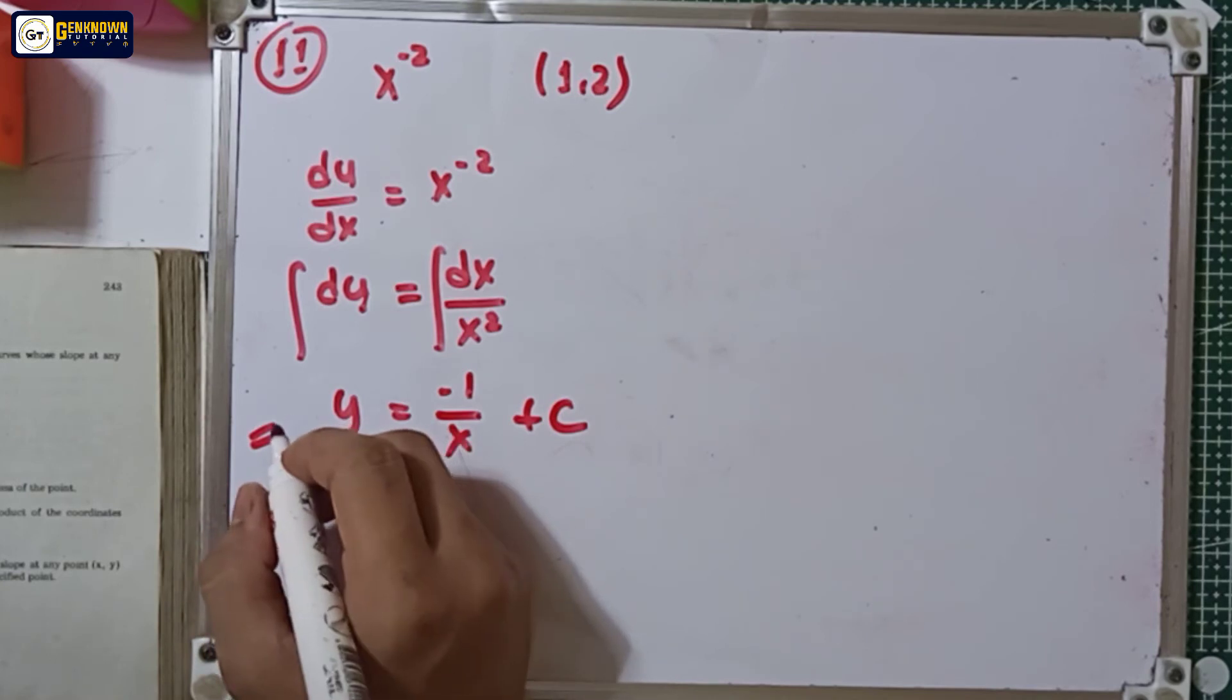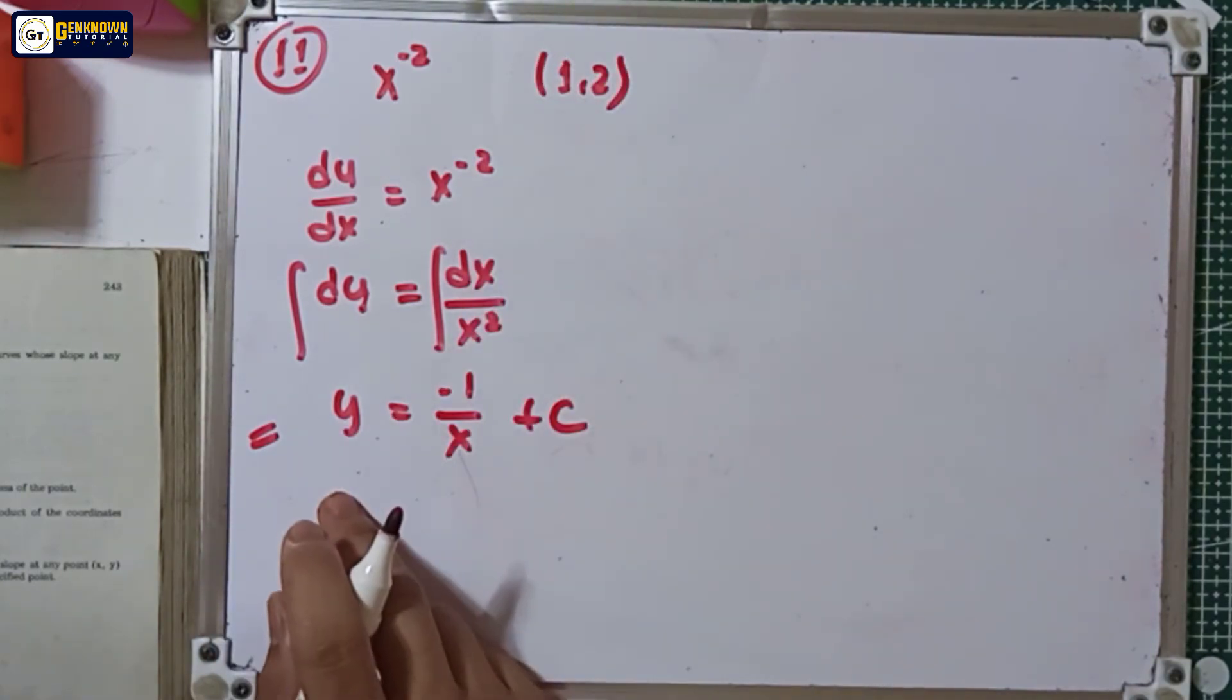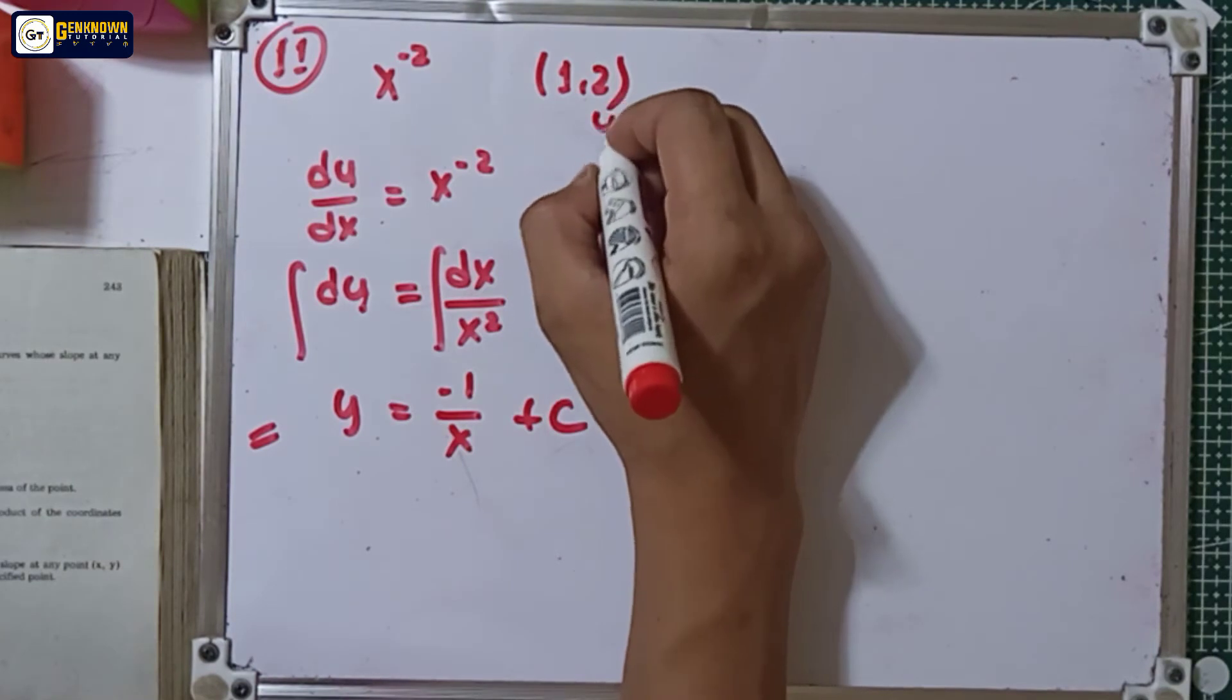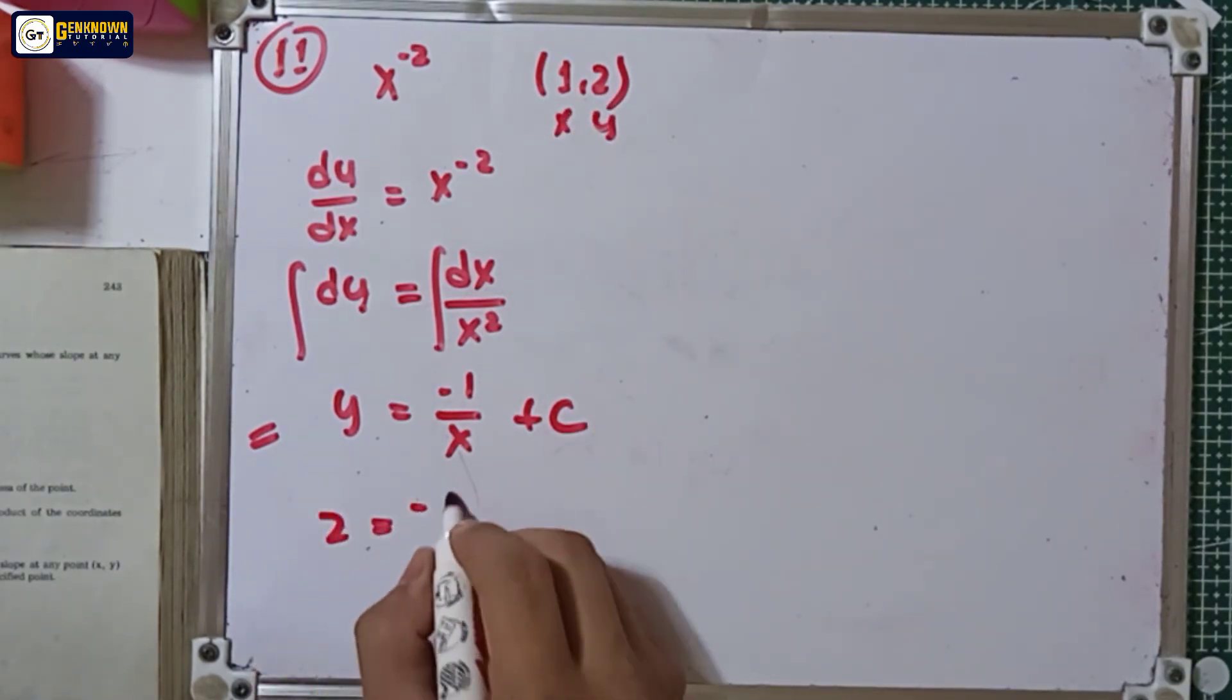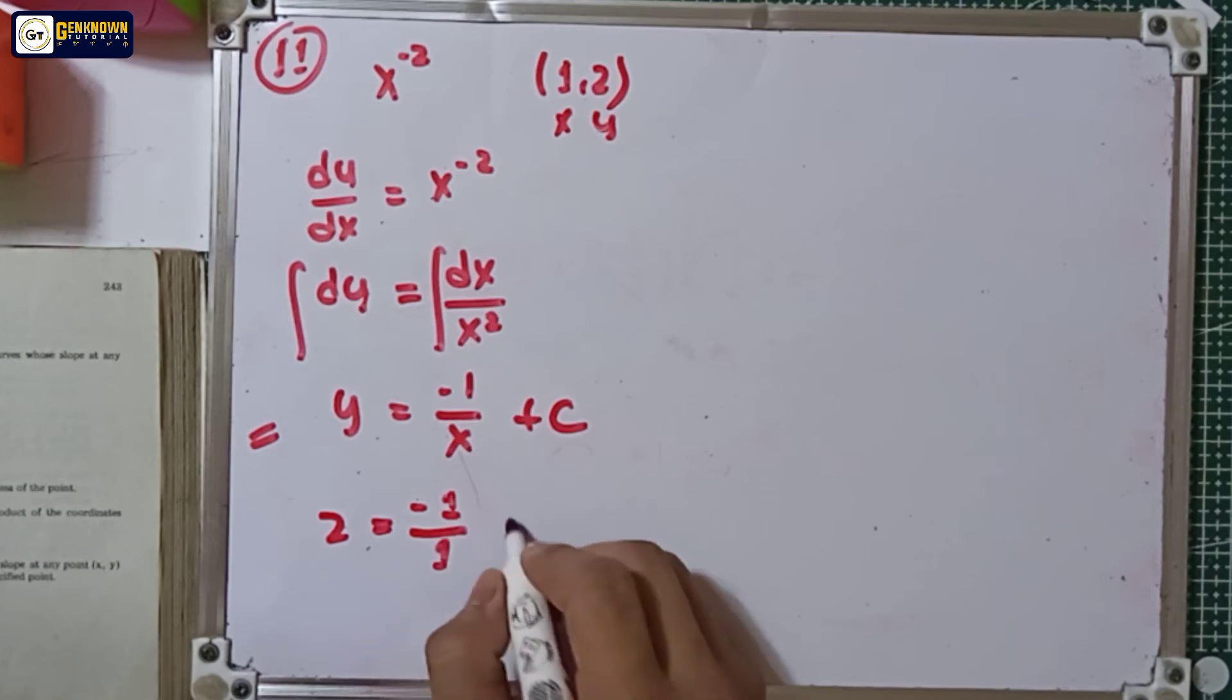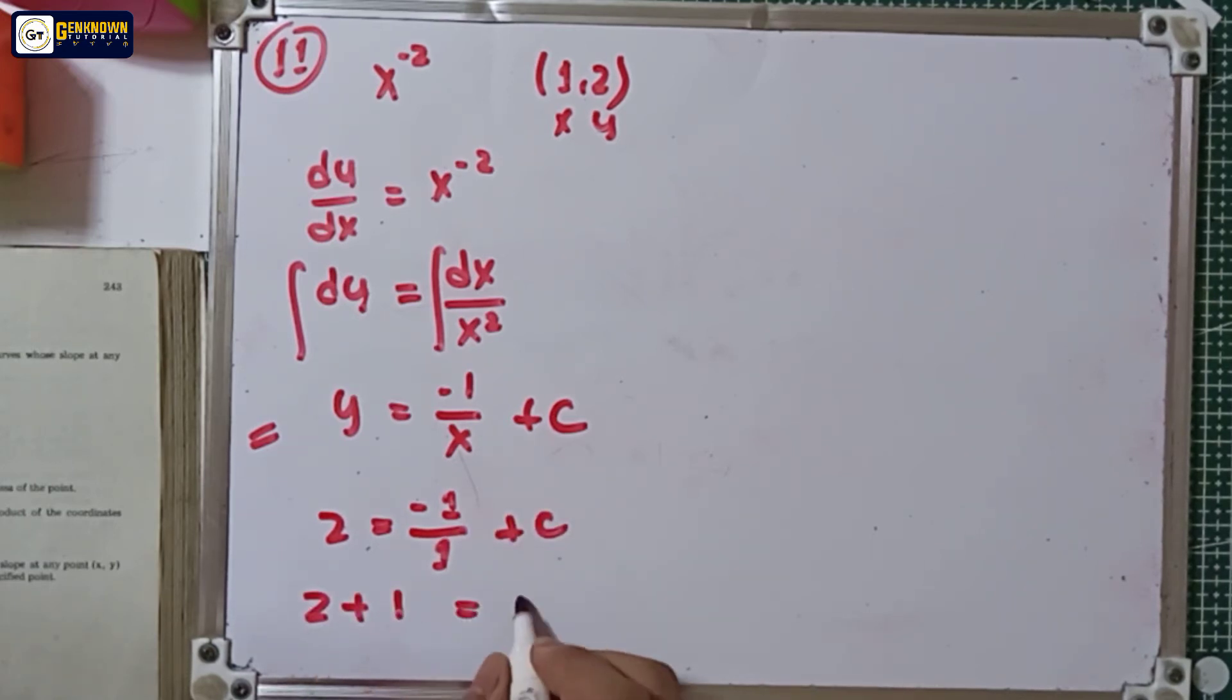This is the equation. Then I substitute this point. So y is 2, x is 1. So 2 is equal to negative 1 over 1 plus the constant. So 2 plus 1 is equal to the constant.